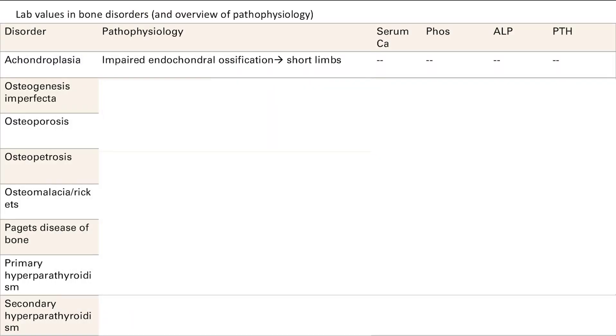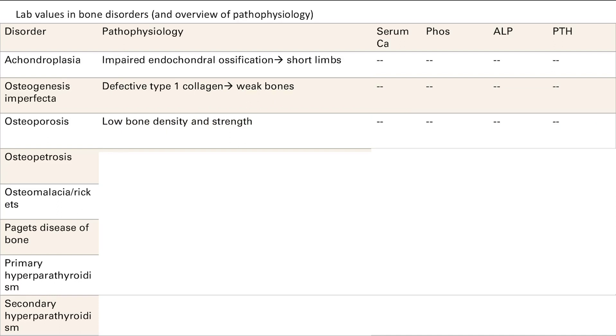This is an overview of pathophysiology and lab values for each disease. Achondroplasia: FGFR3 mutation leading to impaired endochondral ossification, affecting limbs — lab values completely normal. Osteogenesis imperfecta: defective type 1 collagen leading to weak bones — lab values totally normal. Osteoporosis: low bone density and poor bone strength leading to easy fractures — lab values also normal.